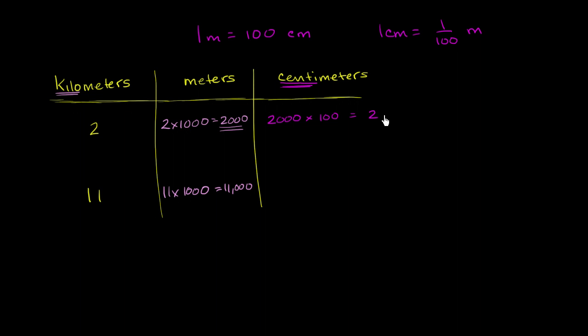And since we have the three zeros from the 2,000, and every time you multiply by 10, you're going to add another zero. We're multiplying by 100, which is equivalent to multiplying by 10 twice. So we're going to have two more zeros. So this is going to be 200,000 centimeters.